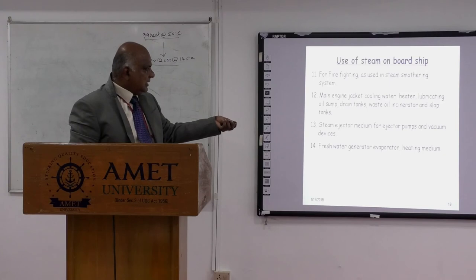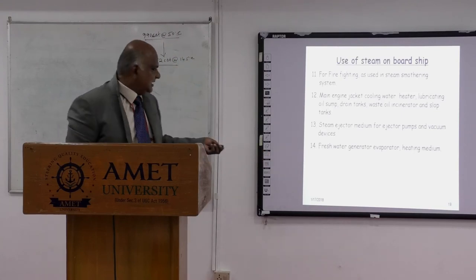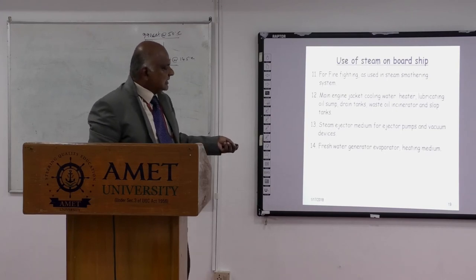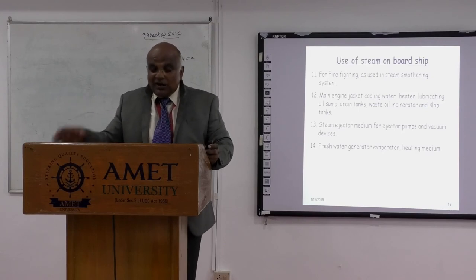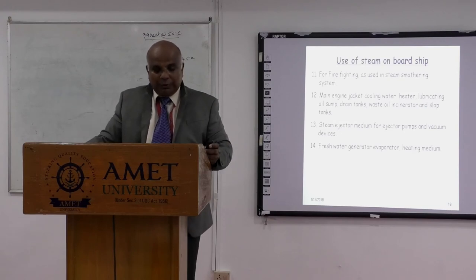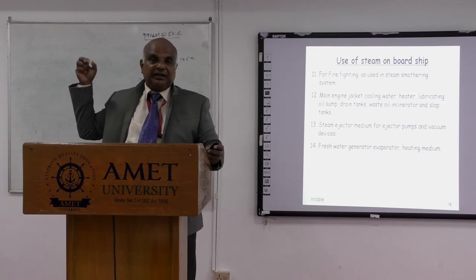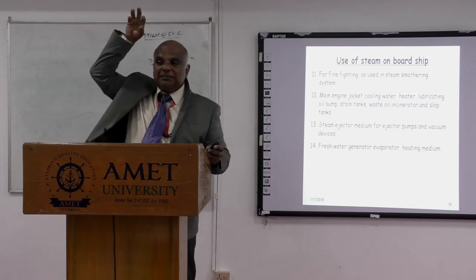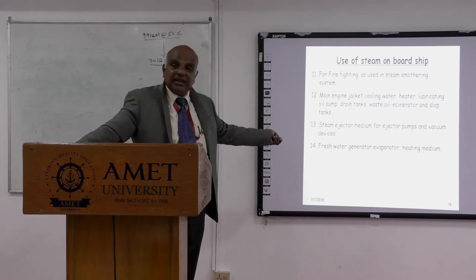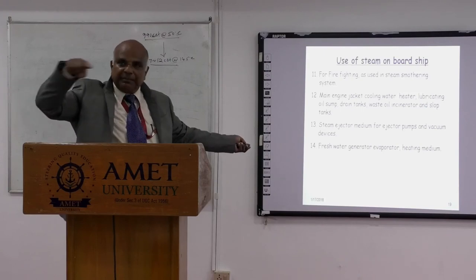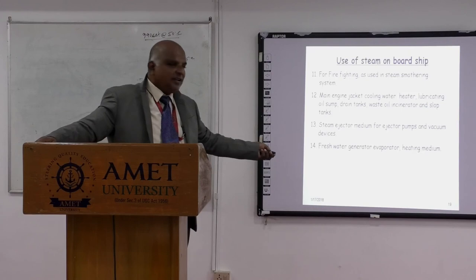Waste heat uses include incinerators, slop tanks, drain tanks, and lube oil heating for better circulation. Steam ejectors are used as a medium for vacuum devices — particularly on steamships where a vacuum is maintained on the turbine exhaust side using steam ejectors to improve turbine efficiency and RPM.